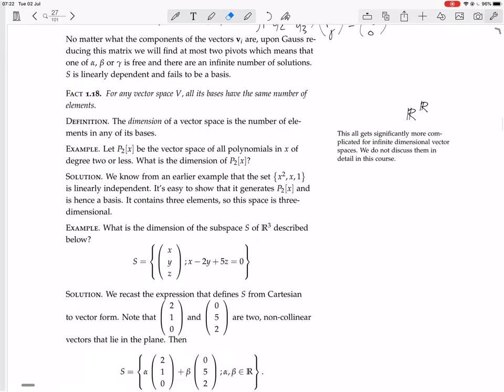Now we have an example. Let P2(x) be the vector space of all polynomials in x, of degree 2 or less. So that's things like polynomials ax squared plus bx plus c, where a, b, and c are any real numbers.